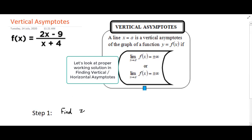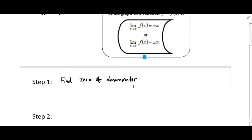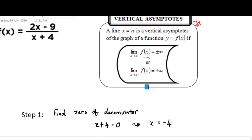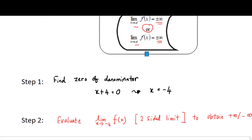Step one, we need to find the zero of denominator. So based on this question, x plus four equal to zero, so we get x is equal to negative four. After we get the zero of denominator, we need to evaluate the two-sided limits. This is to determine whether we can obtain the infinite limit based on the definition of vertical asymptote. So let us start from the left-hand side limit.